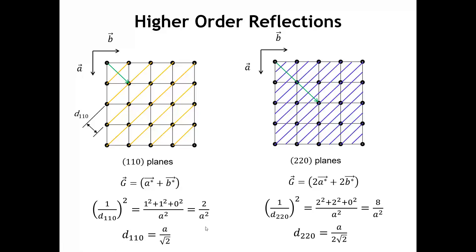Coming back to Bragg's law — we had n·lambda = 2D sin θ and we dropped the n, setting it equal to 1. Now we can see the implication: if you have the 220 set of lattice planes and calculate Bragg's law for n = 2, you would need to double D_HKL, but doubling that distance just gives the spacing of the 110 planes. Now that we can calculate D_HKL values, we're in a position to start analyzing diffraction patterns, which we'll do in the next lecture.